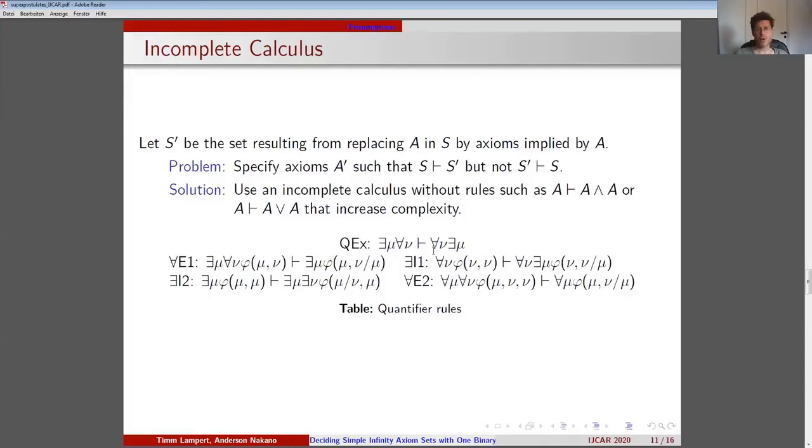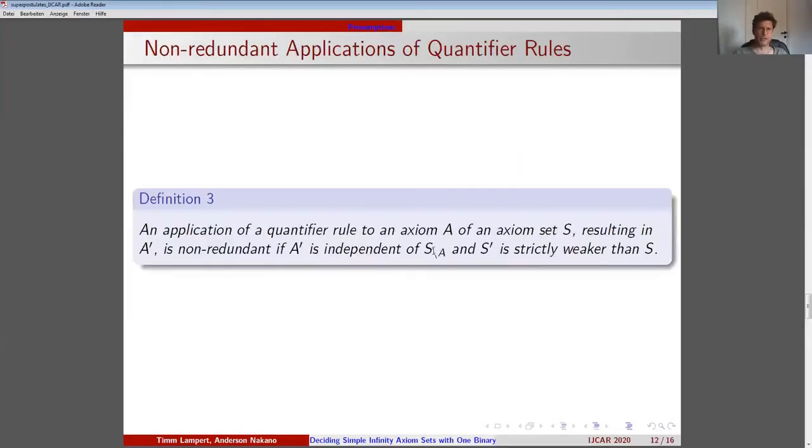We only use quantifier rules, namely rules for exchanging quantifiers, one rule for exchanging quantifiers, two rules to eliminate universal quantifiers, and two rules to introduce existential quantifiers. To generate a new superpostulate S' from a given superpostulate S, we specify axioms A' by non-redundant applications of the quantifier rules.